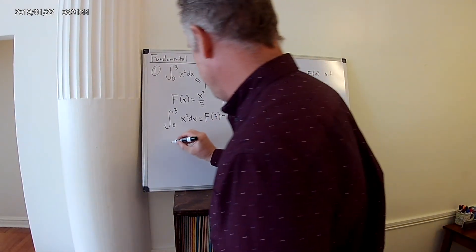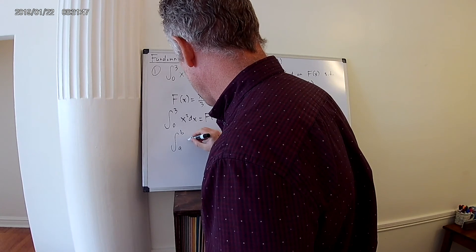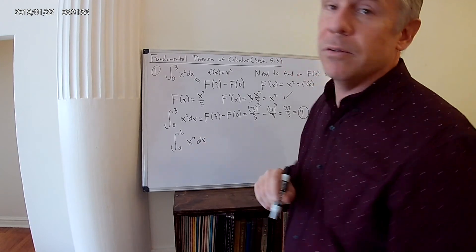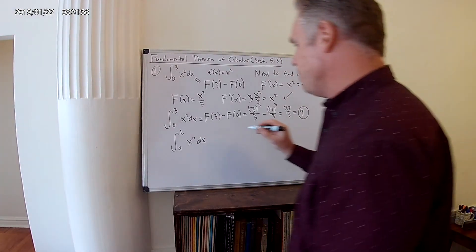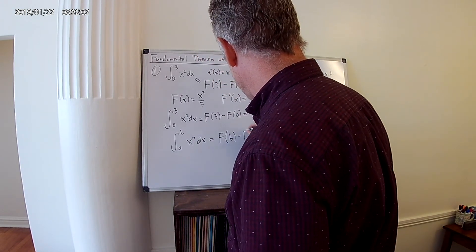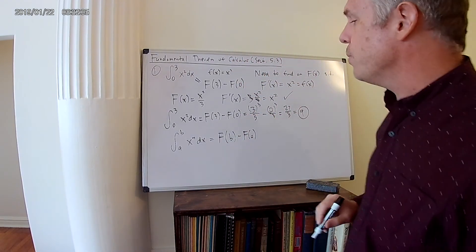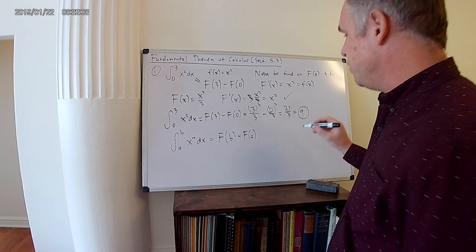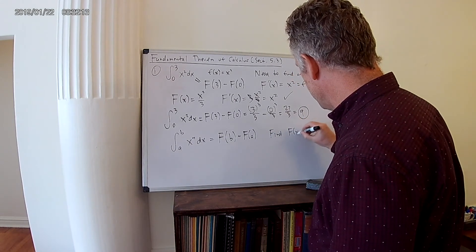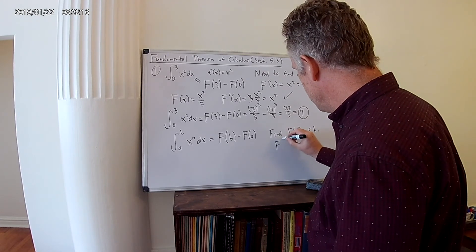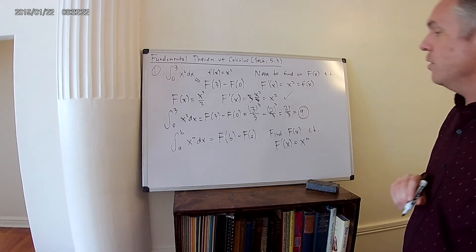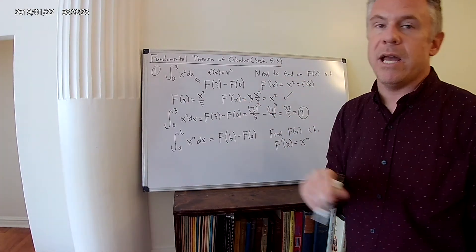And more generally speaking, what if you had the integral from a to b of x to the n dx? So instead of having x squared, let's say you just had a polynomial. By the fundamental theorem of calculus, this equals capital F(b) minus capital F(a), where capital F is the antiderivative of x to the n. So we need to find a function F(x) such that the derivative of capital F(x) equals x to the n. Can we find that function?